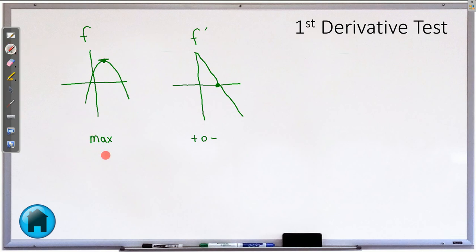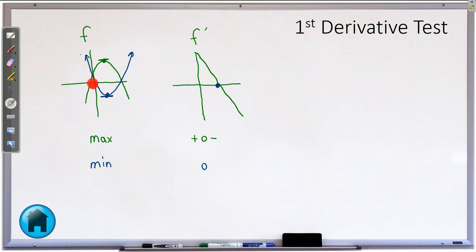Now what would that look like for a minimum? We have something that looks like a valley. Here is our valley right there. Right at that critical point the derivative is 0 — we have this flat spot. What is happening before that? Our function is coming down to the critical point, so we are decreasing, which means our derivative must be negative. After the critical point, our function is increasing, going up, which means the derivative must be positive.